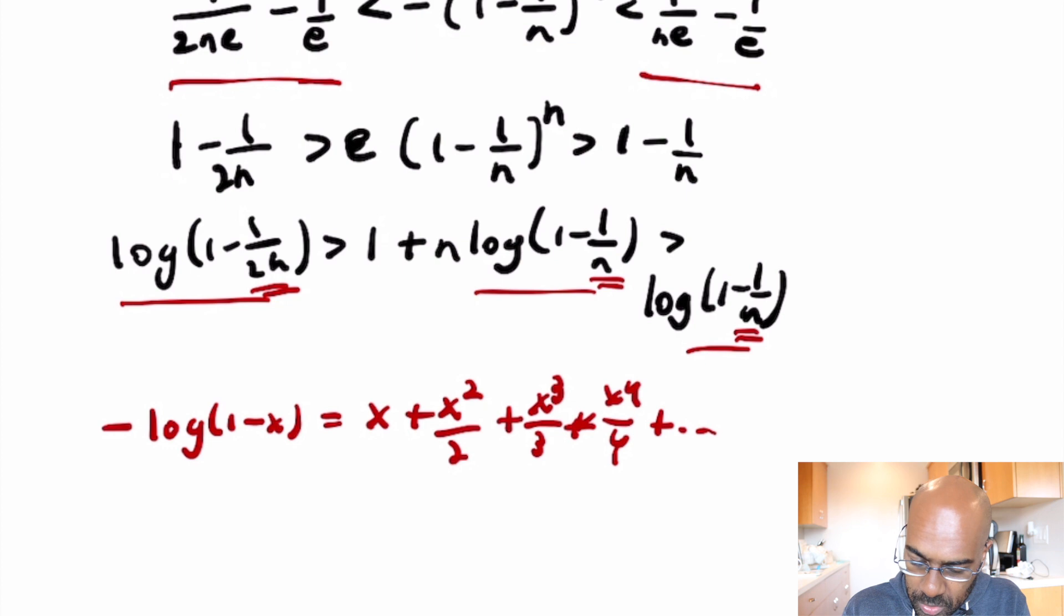Okay, so what we can do then is try to establish an inequality for the Taylor series of these three expressions we have in the inequalities and compare term by term. Then we're fine because these series will actually converge to the values you want.